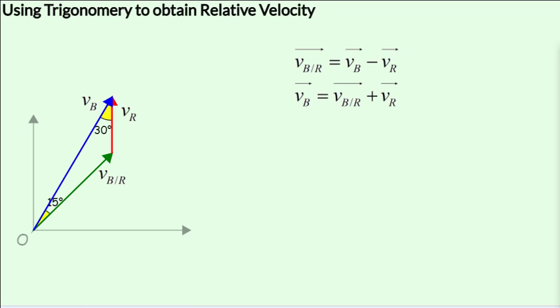We now know all the angles here, that is, this is 15, this is 30, and this will be 180 minus 45 or 135 degrees. And we know the length of V_R or the red vector. So let's use geometry to find the other lengths.